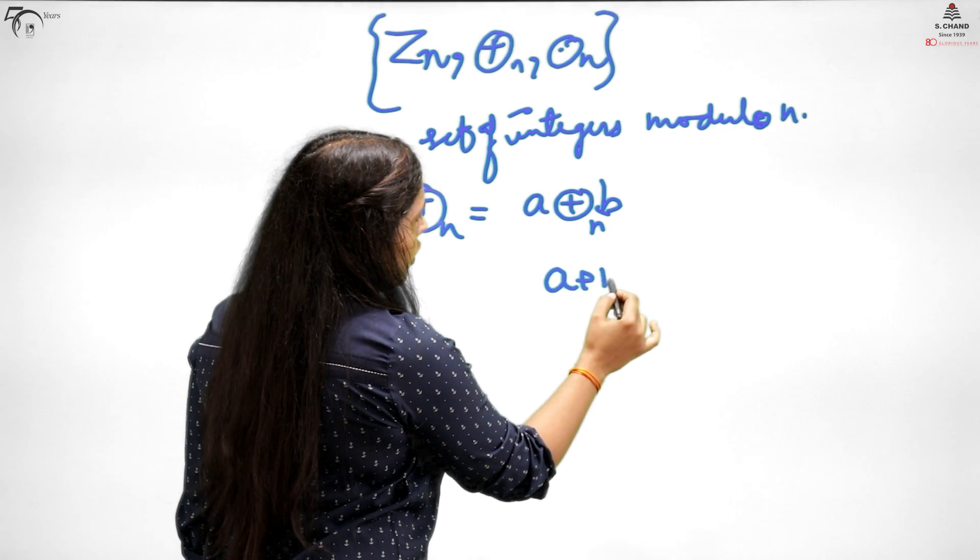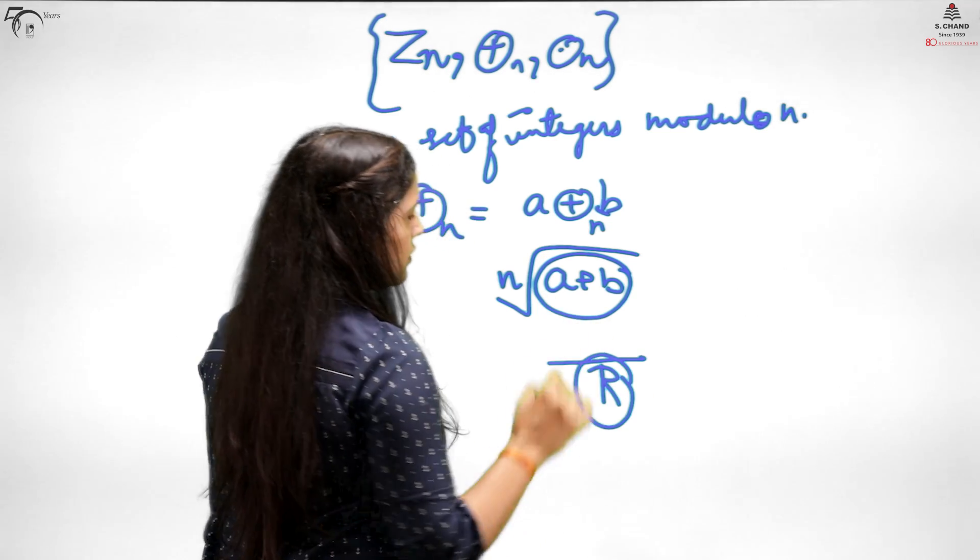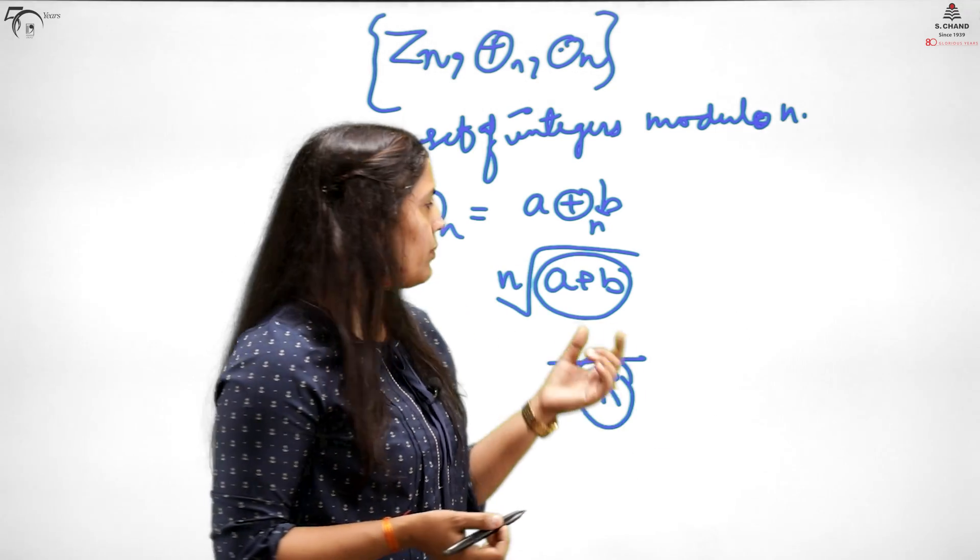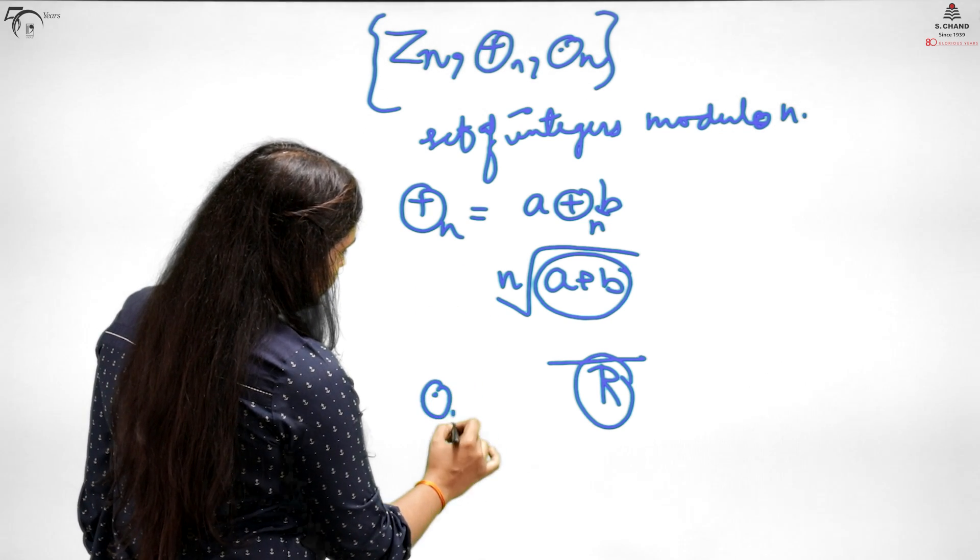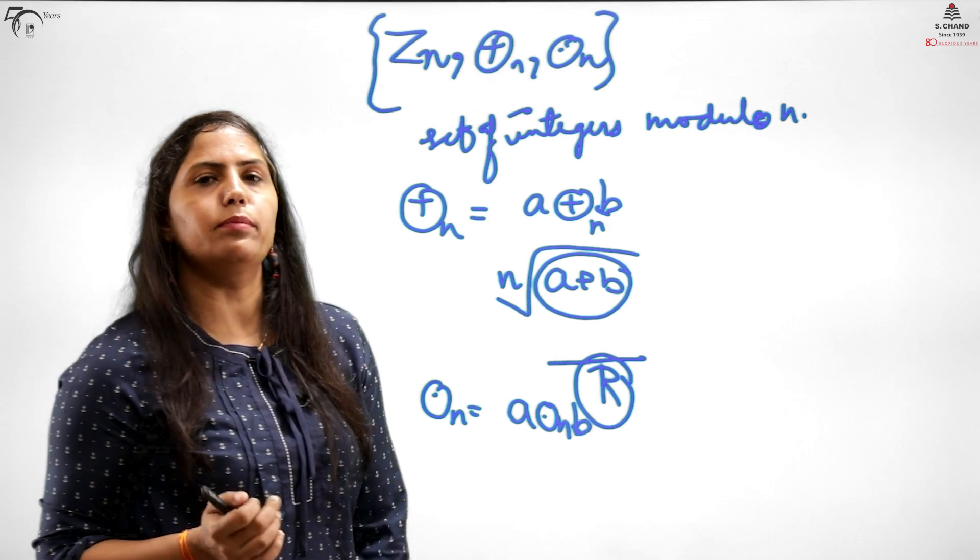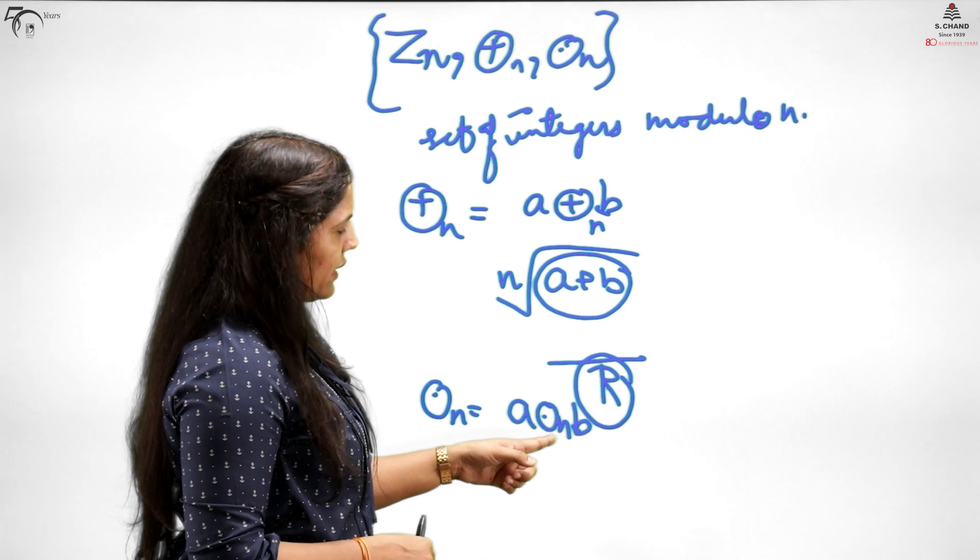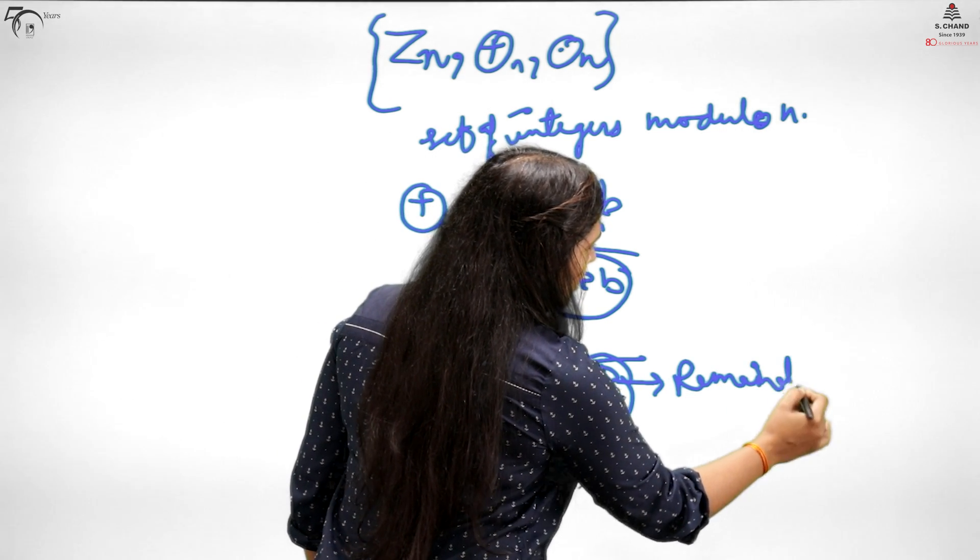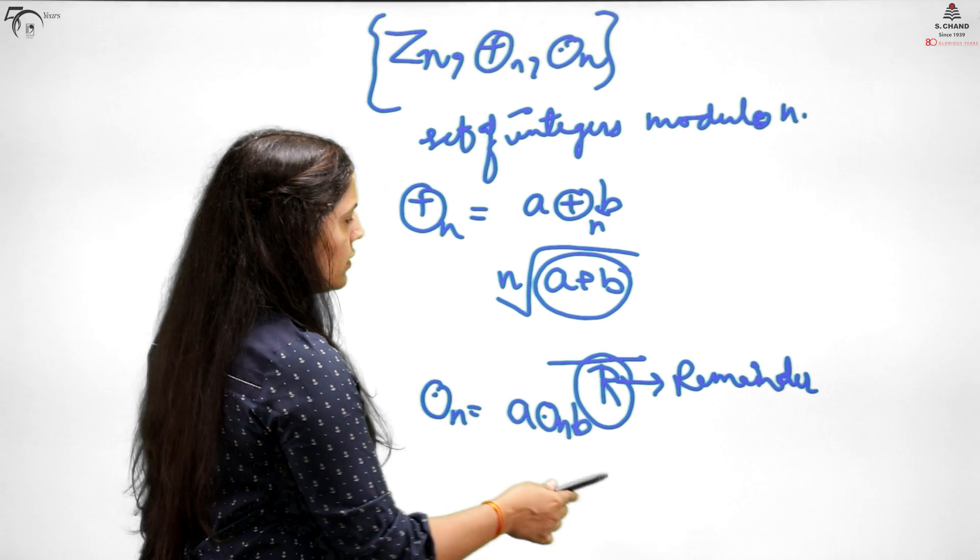In this, you do operations where when you add two elements, you add them, divide by n, and consider the remainder r. Similarly for multiplication, you multiply, divide by n, and consider the remainder. So you can see how this remainder is important. How many properties hold? Will it be a ring? Will it be a group? Let's understand now.